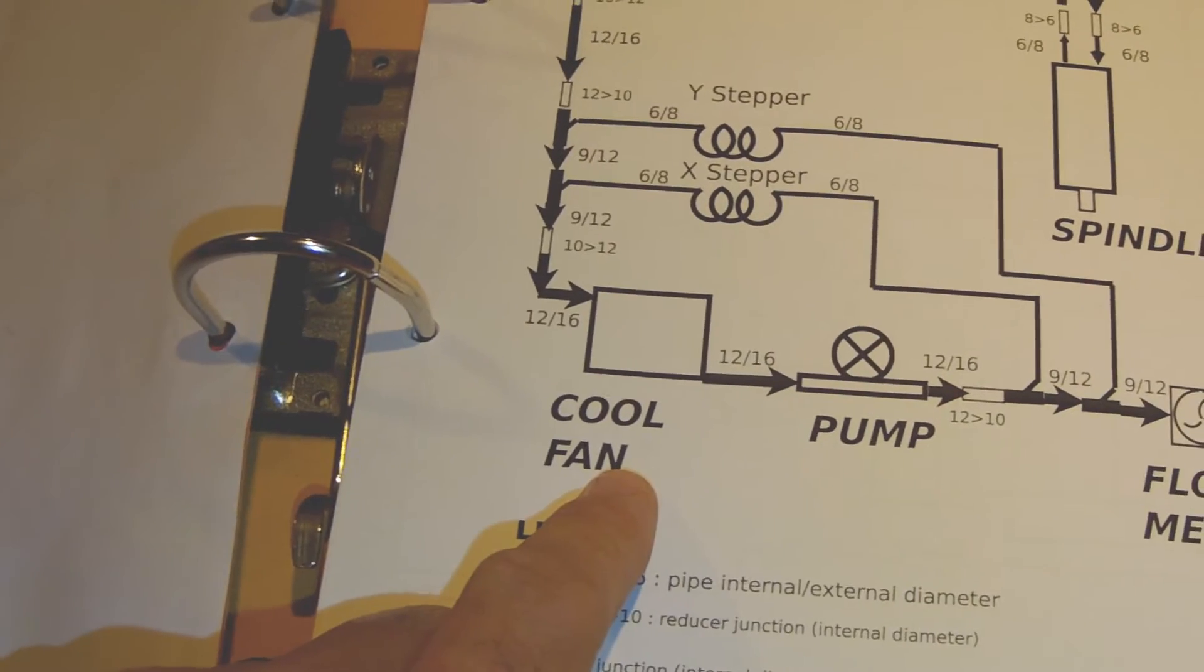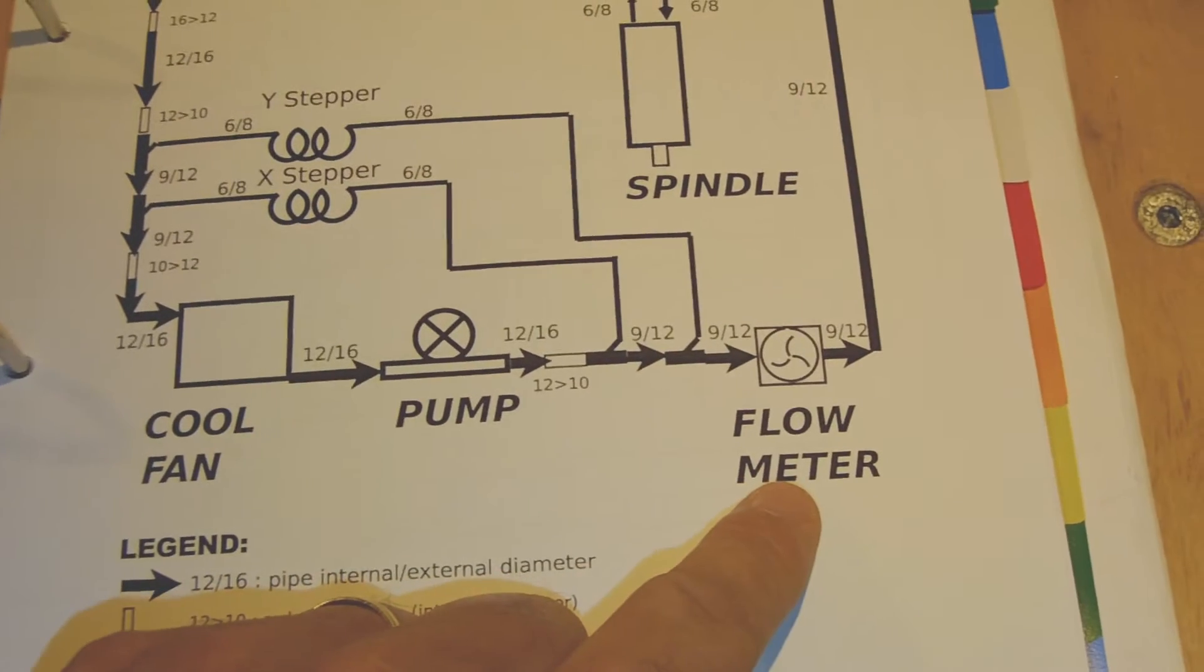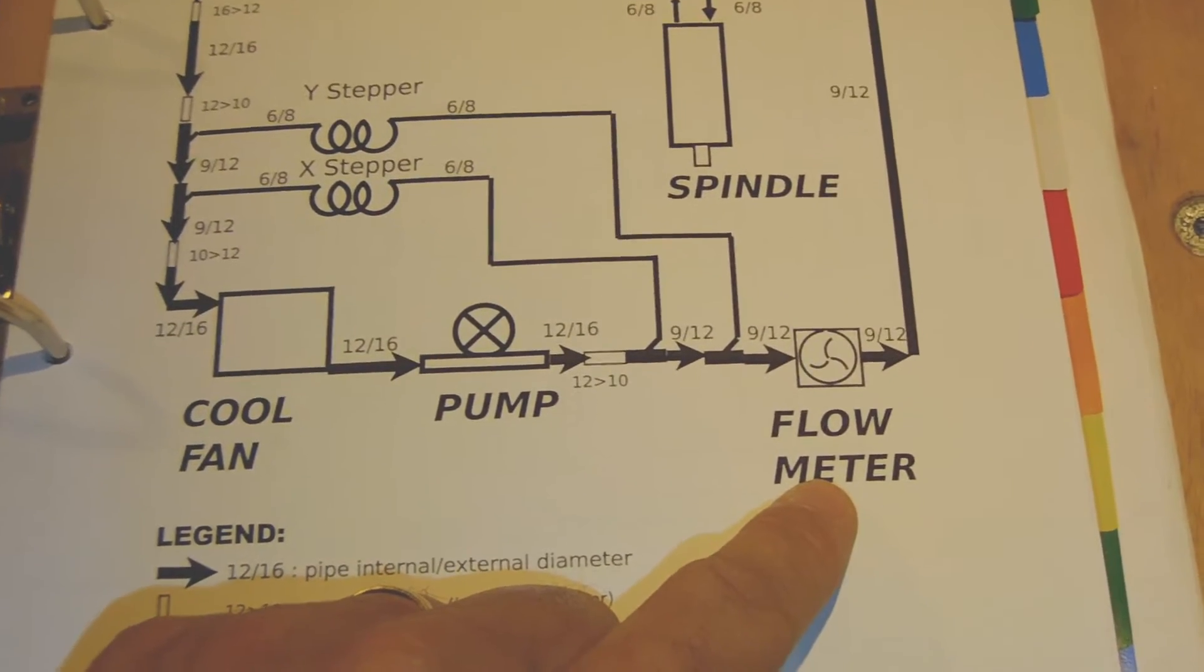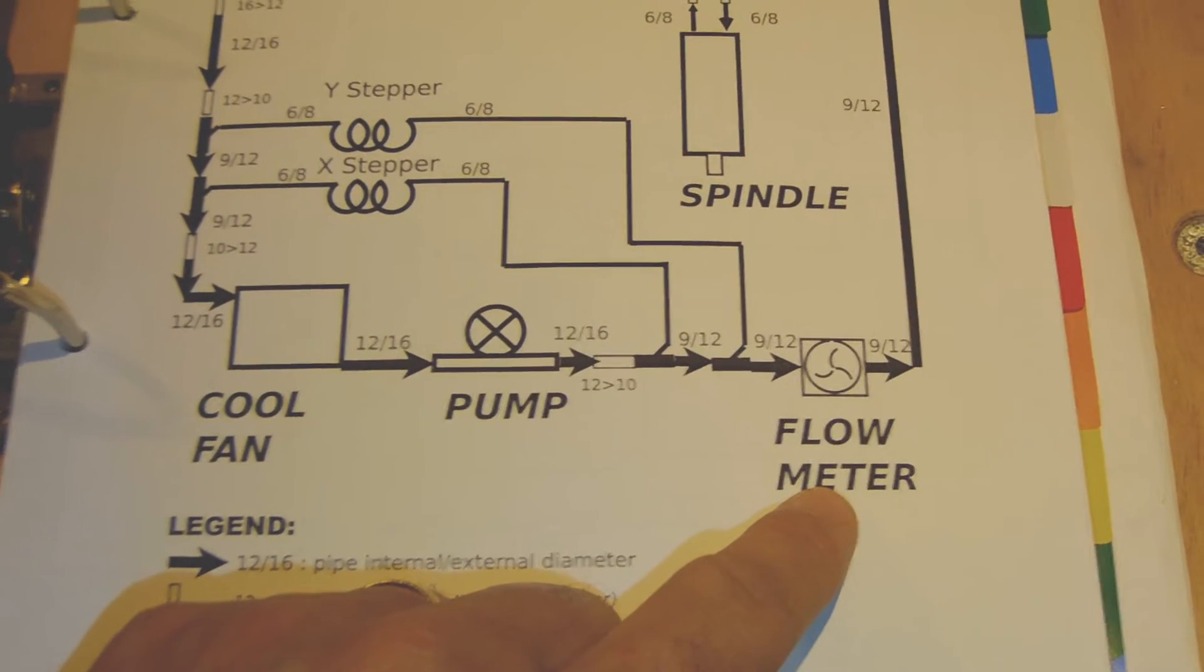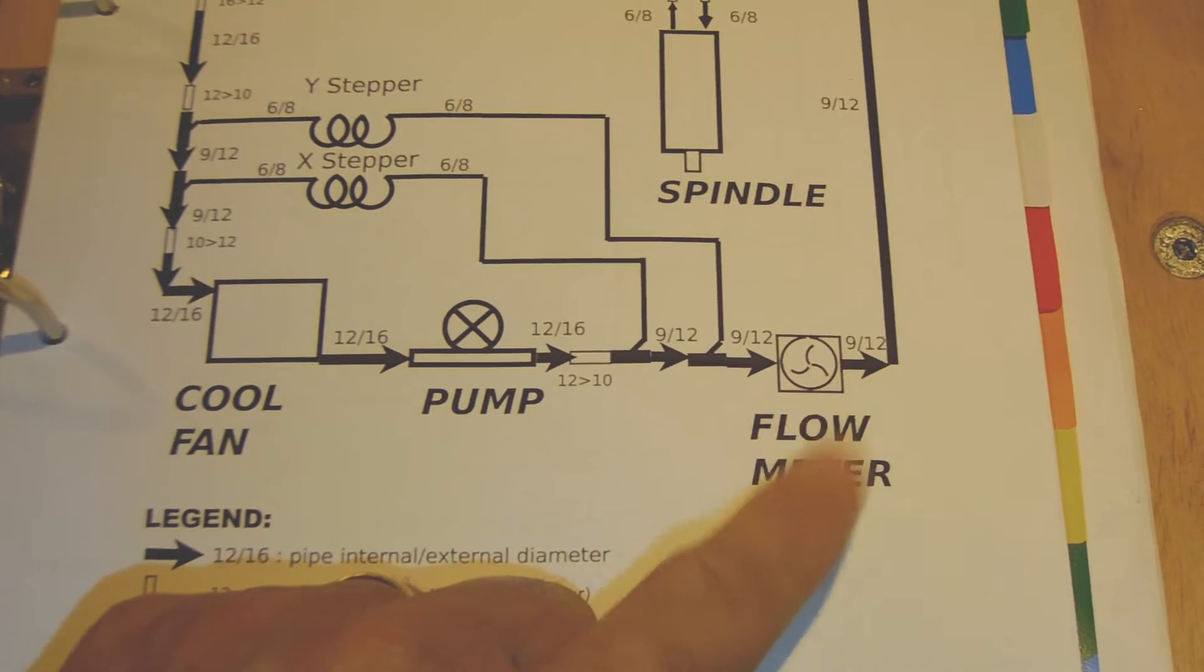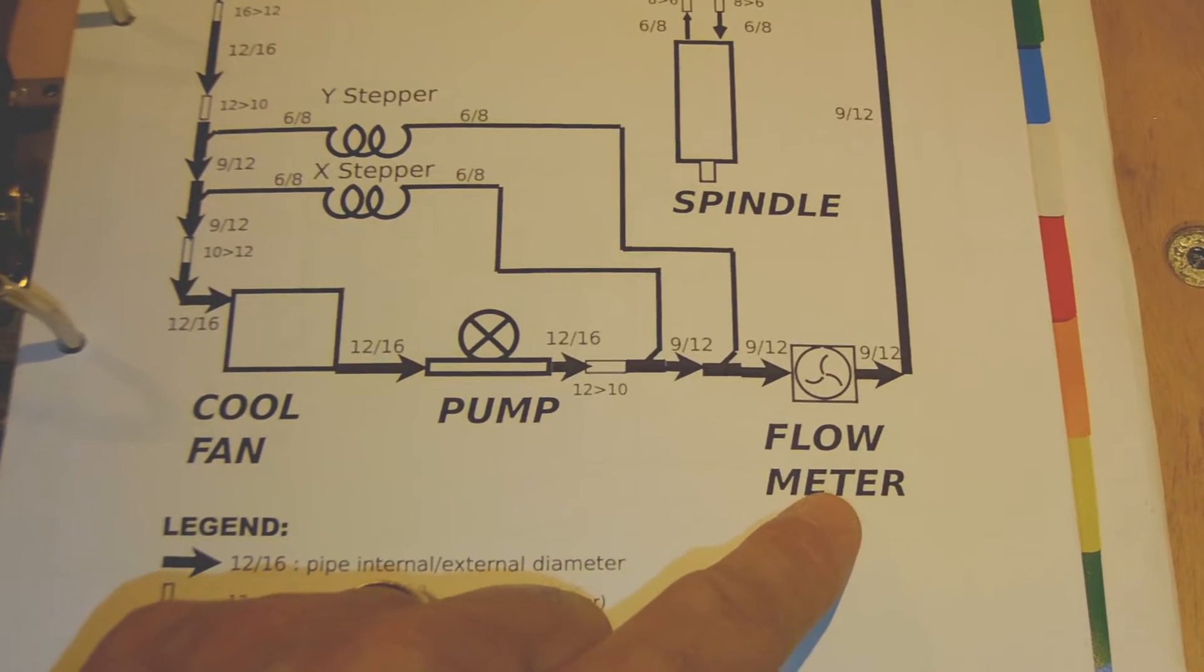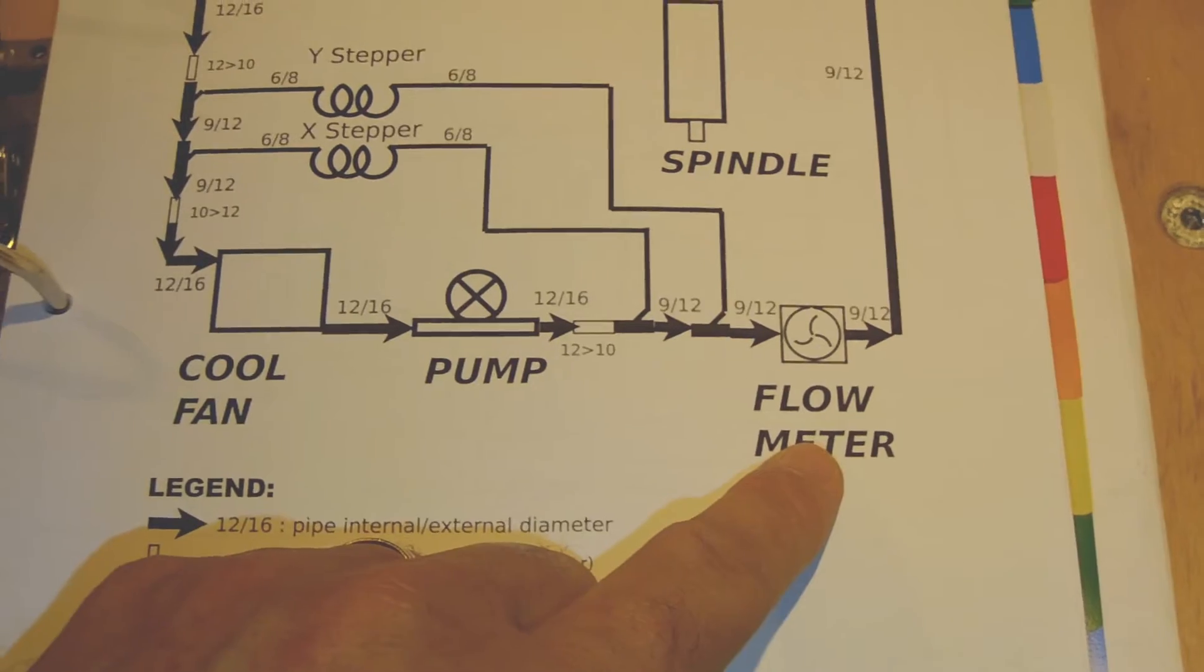It is installed with a flow meter, very close to the station where I have my PC and where I command the CNC. It's a good way for me to be sure that the cooling fluid is running inside the circuit.